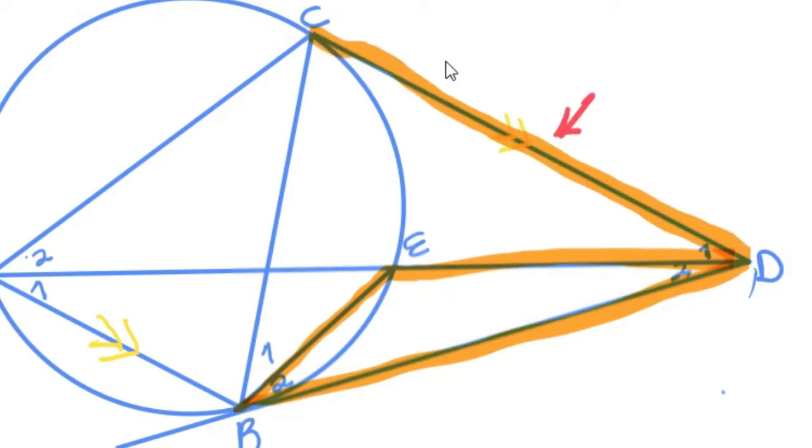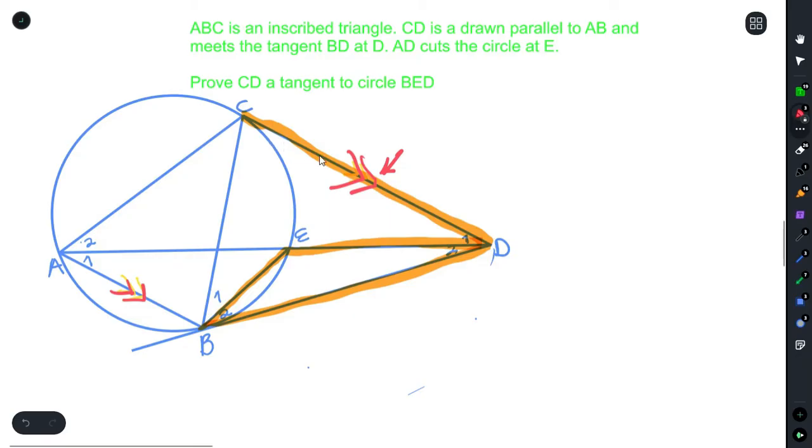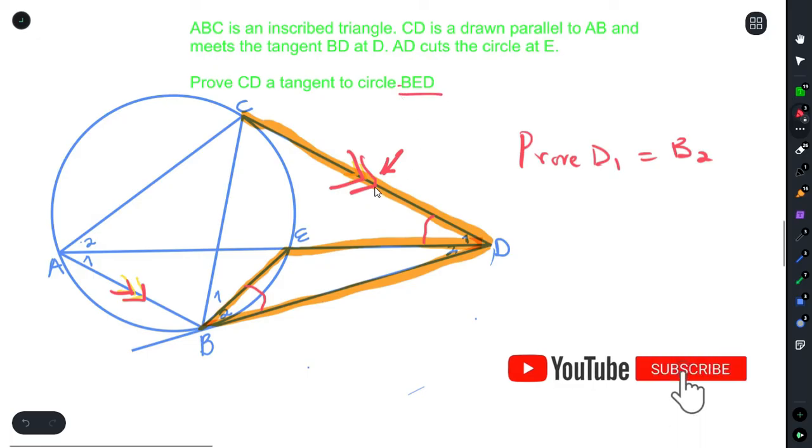So we are trying to prove that CD is a tangent to the circle BED. So now if this is your tangent, as we said, and this is the triangle, you can see this kind of looks like your tan chord. So I'm literally trying to prove that D₁ is equals to B₂. So if you are able to prove that D₁ is equals to B₂, then therefore it will also mean that CD is a tangent for this particular circle.